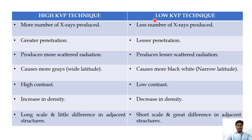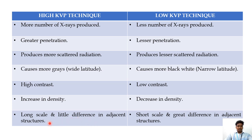Let's see the difference between High KVP technique and Low KVP. High KVP produces more X-rays compared to Low KVP. High KVP has higher penetration power, while Low KVP has lesser penetration power. Higher KVP produces more scatter radiation, while Low KVP produces lesser scatter radiation. High KVP produces a longer gray scale with a wider latitude, while Low KVP produces a black and white narrow latitude. Higher KVP produces lower contrast, while Low KVP produces higher contrast. When High KVP is used, there is an increase in density, while Low KVP decreases density. High KVP shows a long scale with little difference in adjacent structures, while Low KVP shows a short scale with greater difference in adjacent structures.